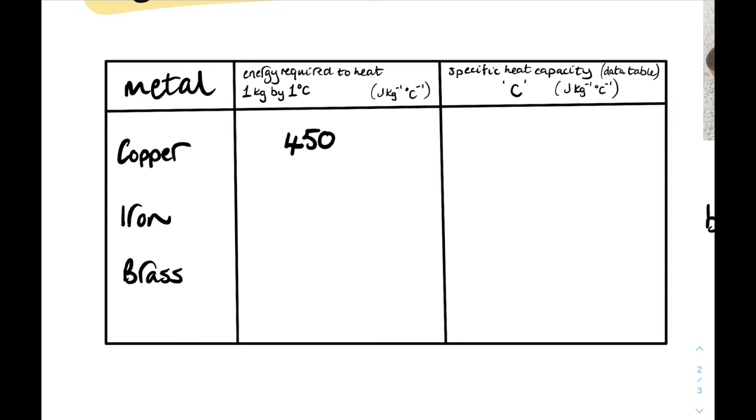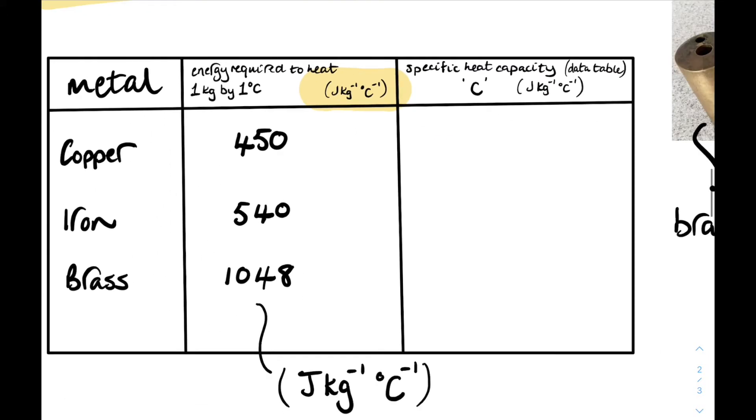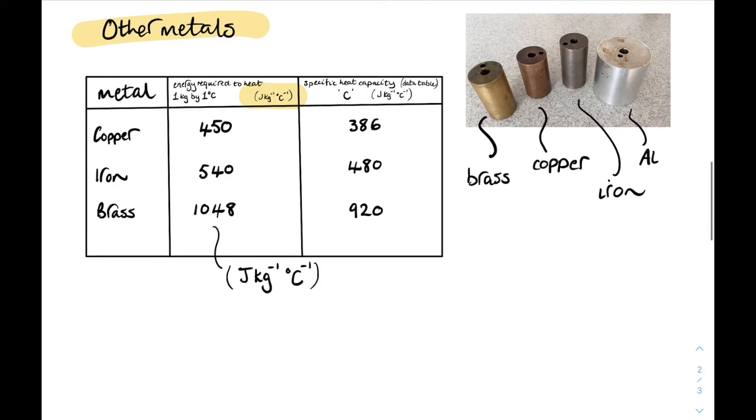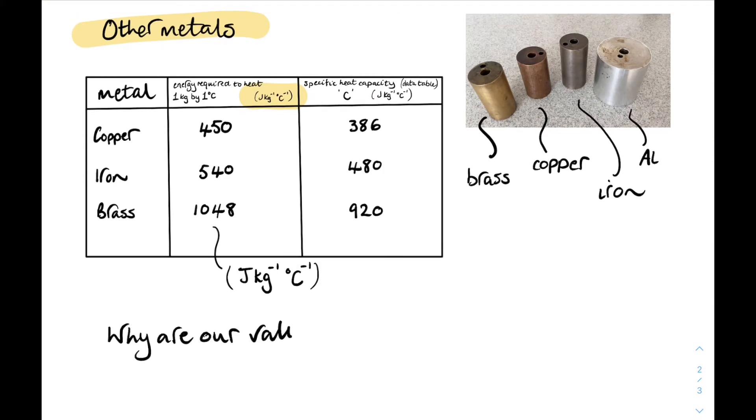But here's our results for copper. 450 joules to heat 1 kilogram by 1 degree. 540 for iron and 1048 for brass. Now if we look up those values on our data table, our datasheet at the front of any exam paper, there's the actual values. Now we've got them in the right order. But why are our values too high?